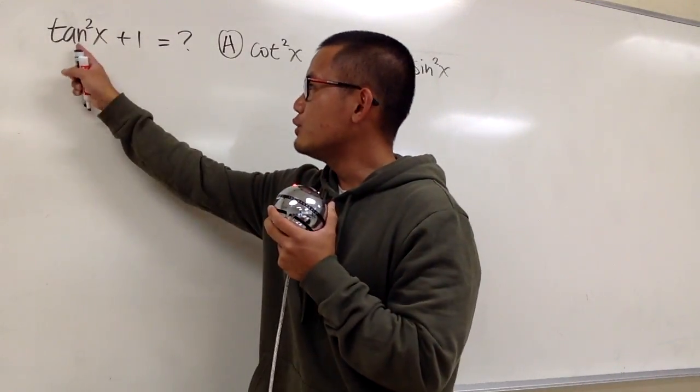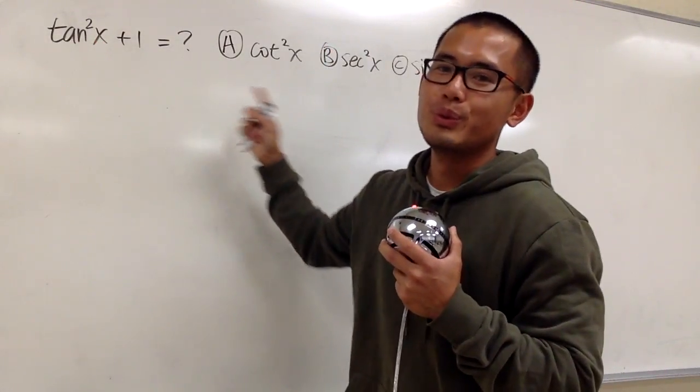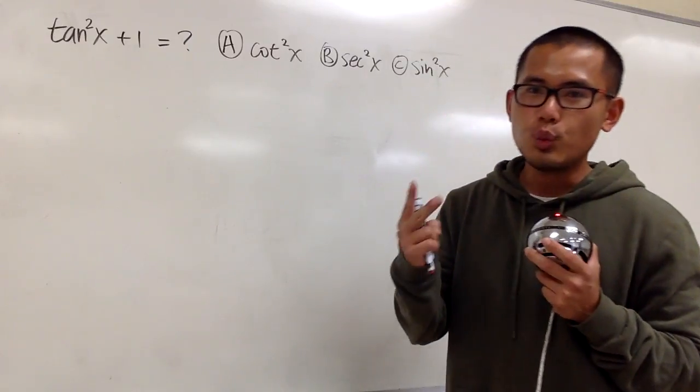For this question, we have tan²x + 1 is equal to what? And we technically have two ways to do it.